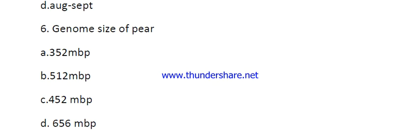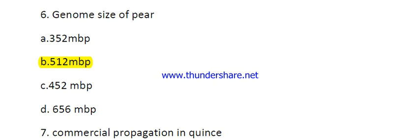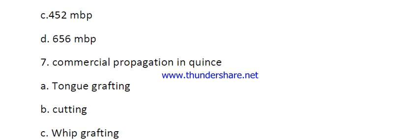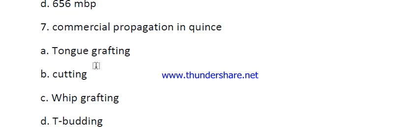Question number six: genome size of pear. Options are 352 mbp, 512 mbp, 452 mbp, and 656 mbp. The right answer is 512 mbp. Question number seven: commercial propagation in quince. Options are tongue grafting, cutting, air layering, and budding.